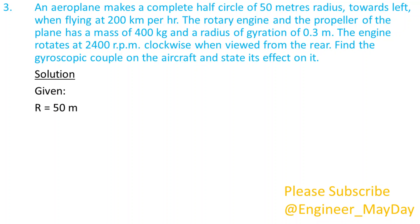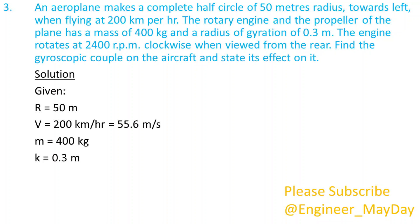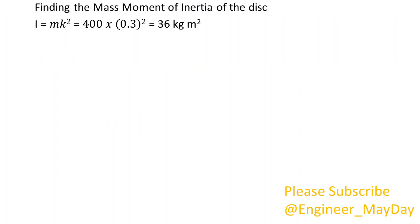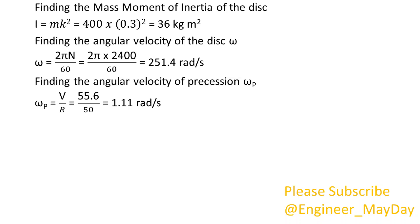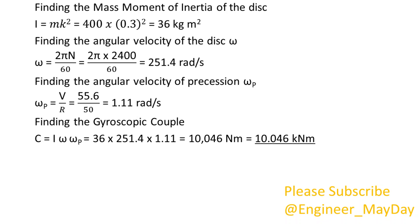Given: R equals 50 metres, V equals 55.6 metres per second, M equals 400kg, K equals 0.3 metres, N equals 2400rpm. Finding the mass moment of inertia of the disc: I equals 36 kg·m². Finding the angular velocity of the disc omega: omega equals 251.4 radians per second. Finding the angular velocity of precession omega p: omega p equals 1.11 radians per second. Finding the gyroscopic couple: C equals 10.046 kNm.